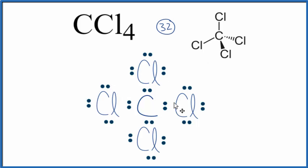If we look at this, the carbon in the center has eight, so it has an octet. Each chlorine has an octet. This is a really good Lewis structure for CCl4.